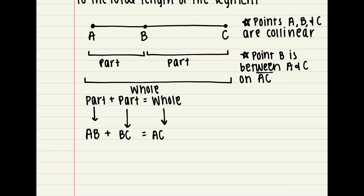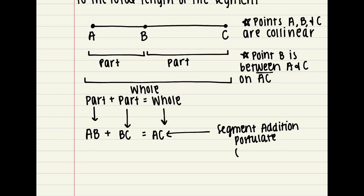For this specific example with A, B, and C, your Segment Addition Postulate is AB plus BC equals AC. This right here is your Segment Addition Postulate. Sometimes we will abbreviate it — I usually just call it SAP because it is a mouthful.